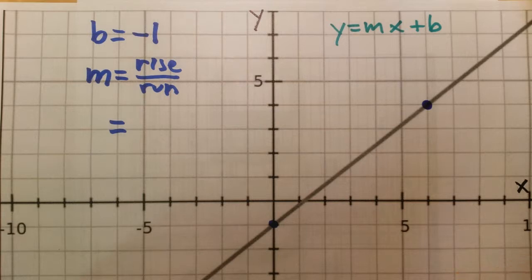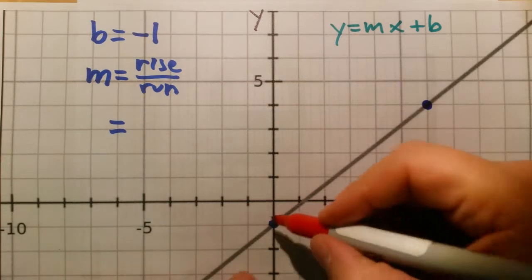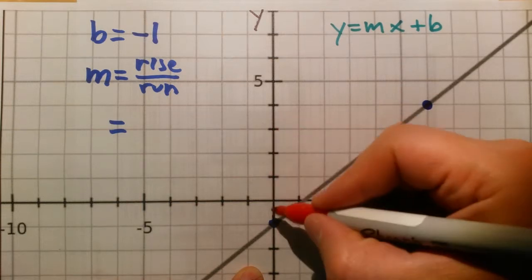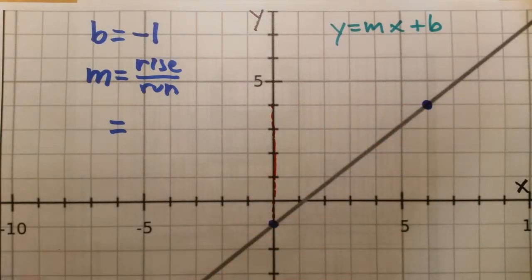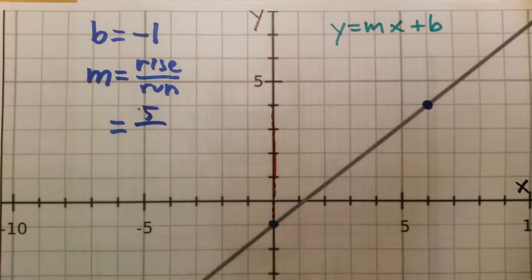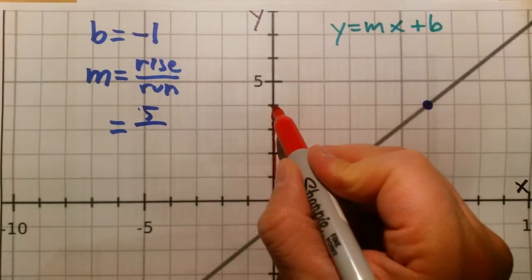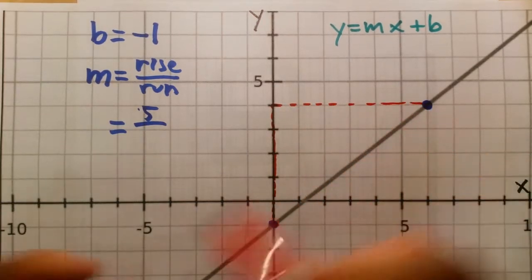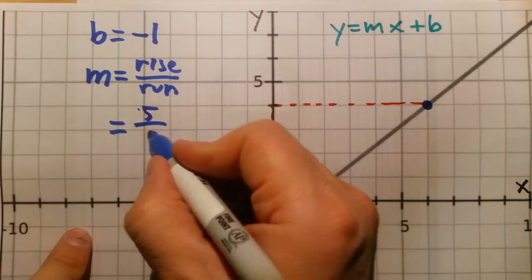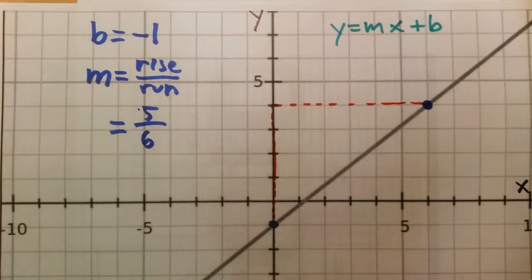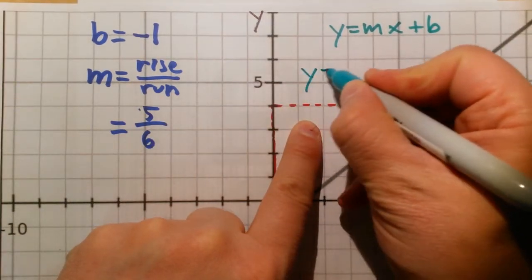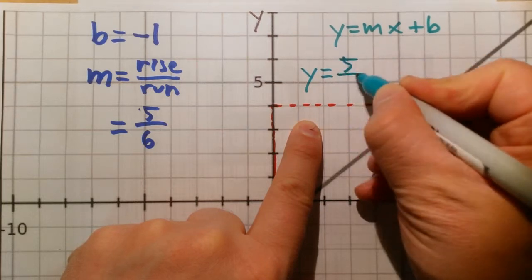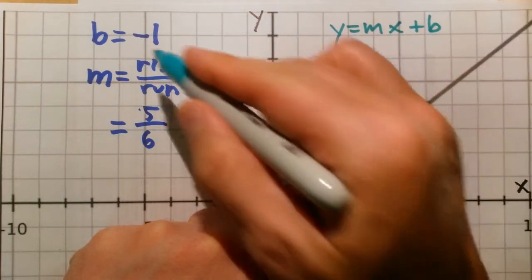Let's figure out our rise and our run. What's our rise between these two points? It's one, two, three, four, five. So we have a rise of five. And a run from this point to this point — one, two, three, four, five, six. So it's five over six. The equation of this line is y equals five over six x minus one, because negative one is our y-intercept.